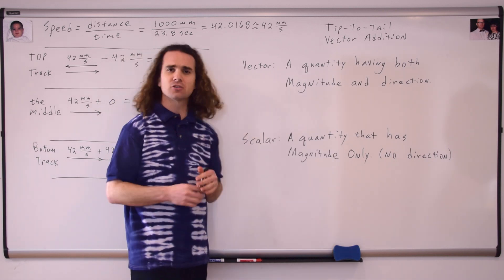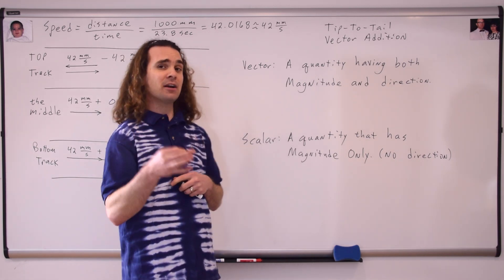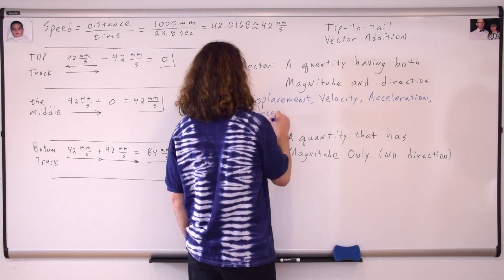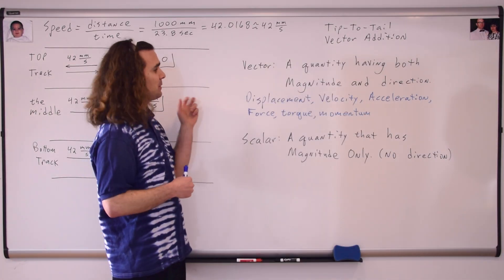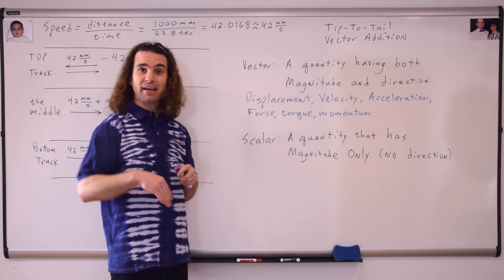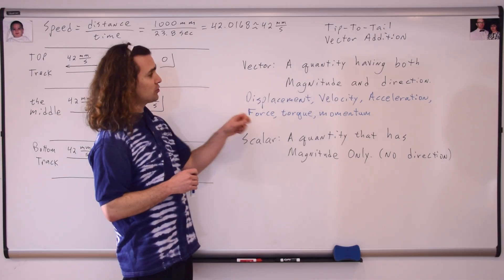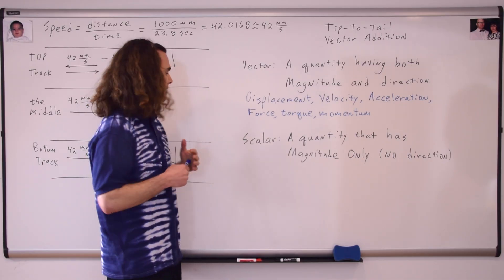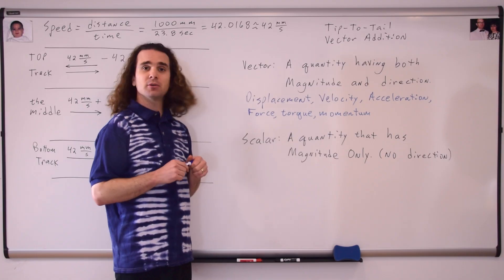So, class, let's start with vectors. Could you please give me some examples of variables that are vectors? Displacement. Velocity. Acceleration. Force. Torque. Momentum. Yes, displacement, velocity, acceleration are all vectors that we've worked with. And force, torque, and momentum are actually vectors we haven't yet worked with, but we will. And now, could I please have some variables that are scalars?